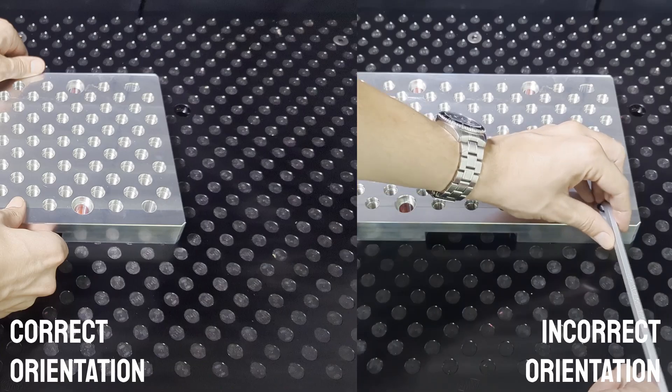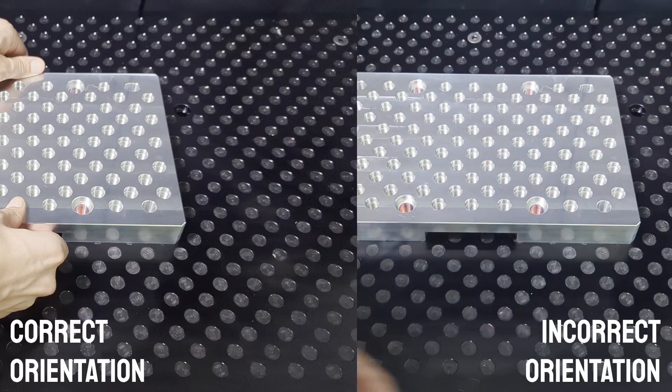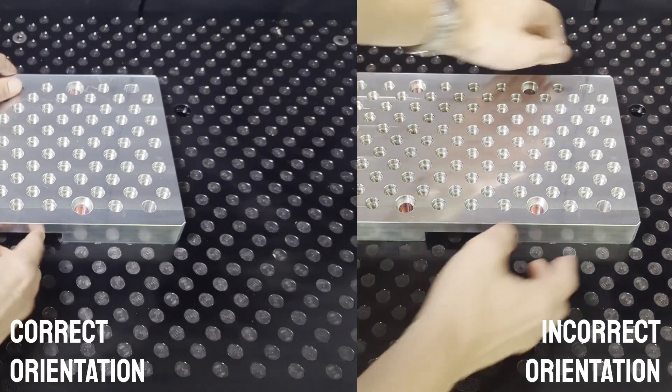As you can see here, if we incorrectly orient the pin, then the clearance on the sides allow for far more angular play before we tighten the fixture down.